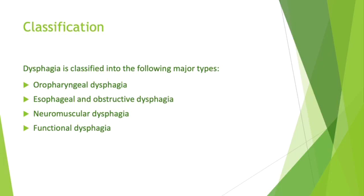Dysphagia is classified into four major categories: oropharyngeal, esophageal and obstructive, neuromuscular, and functional.